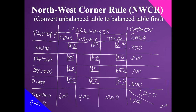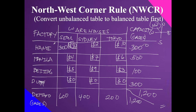Now we apply the Northwest Corner Rule. The northwest cell is the upper-left corner — Hanoi to Seoul, cost $8. The demand for Seoul is 600 and Hanoi's capacity is 300, so we allocate 300 units here. Hanoi is now exhausted (zero remaining), and Seoul's remaining demand becomes 600 minus 300 = 300. Hanoi cannot supply Sydney or Tokyo.